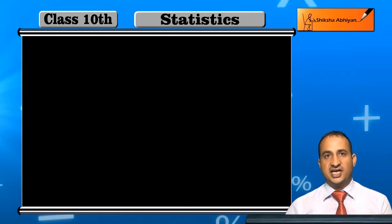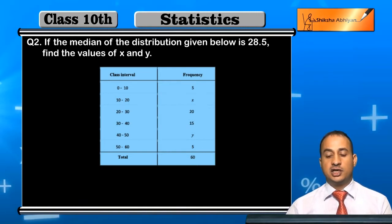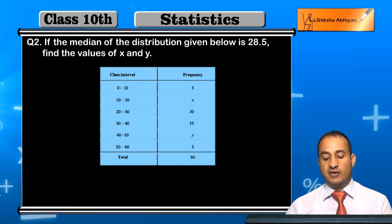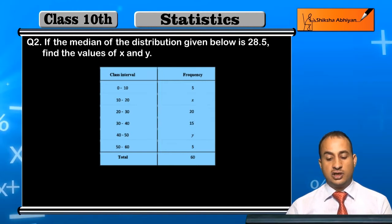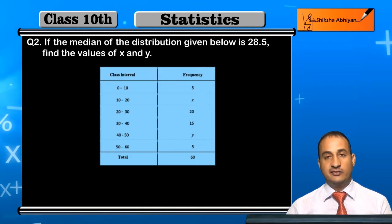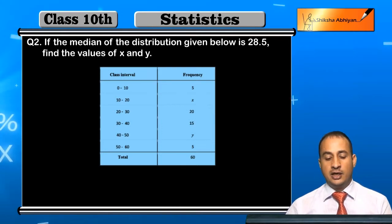Now students, see the second question of the exercise. If the median of the distribution given below is 28.5, find the values of x and y. The class intervals are 0-10, 10-20, 20-30, and their respective frequencies are 5, x, 20, 15, y, 5. The total frequency sigma f_i is given as 60.